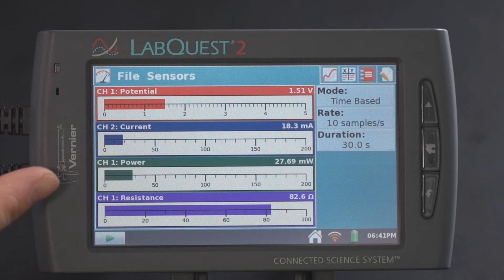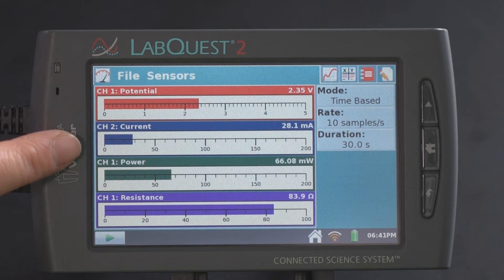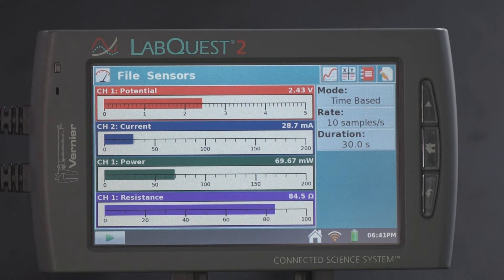And as you can see, the meters read potential, current, increasing power, and it calculates the resistance as well. And I can change the resistance with the knob.